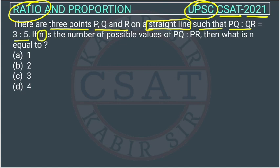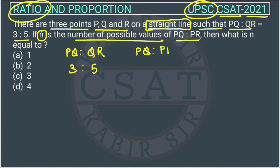These points are on a straight line such that PQ ratio QR is 3 is to 5. If N is the number of possible values of PQ ratio PR, then what is N equal to? They have given the ratio of PQ:QR, this is 3 is to 5. They are asking the number of possible values of PQ ratio PR. Then what is N equal to?